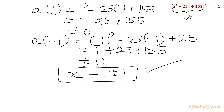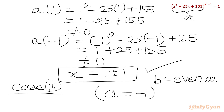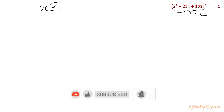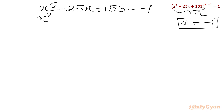Now we will consider Case 3: the base equals negative 1 with an even power. I will put a equal to minus 1, so I write x squared minus 25x plus 155 equal to minus 1. Rearranging gives x squared minus 25x plus 156 equal to 0.